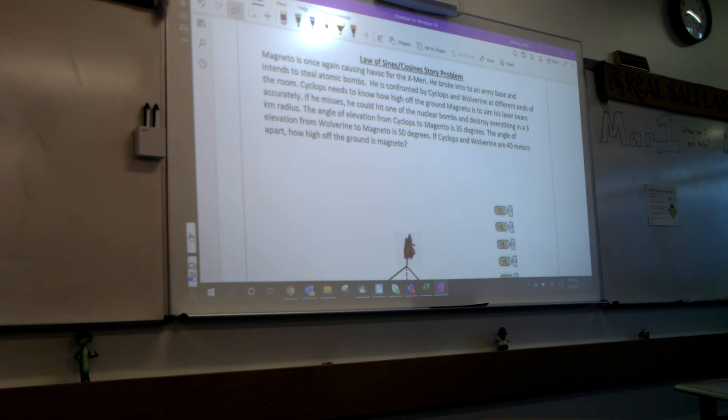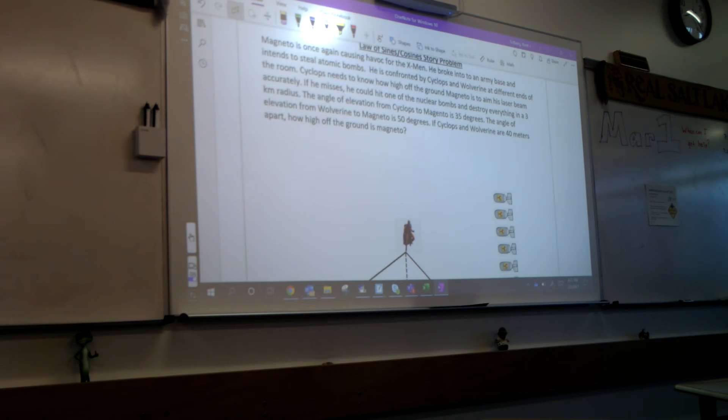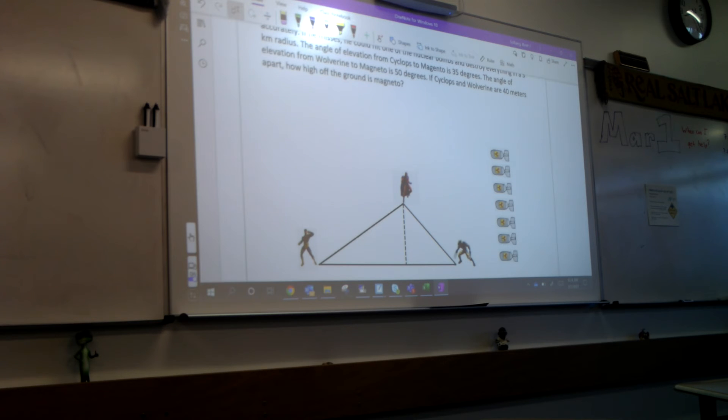Okay. Magneto is once again causing havoc for the X-Men. He broke into an army base and intends to steal atomic bombs. He is confronted by Cyclops and Wolverine at different ends of the room. Cyclops needs to know how high off the ground Magneto is to aim his laser beam accurately. If he misses, he can hit one of the nuclear bombs and destroy everything in a 3-kilometer radius. The angle of elevation from Cyclops to Magneto is 35 degrees. The angle of elevation from Wolverine to Magneto is 50 degrees. If Cyclops and Wolverine are 40 meters apart, how high off the ground is Magneto? Whoa. Epic story problem, right?